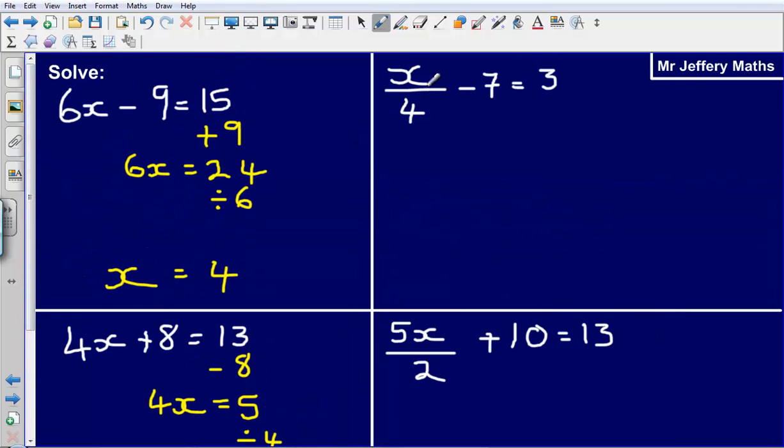Next one here, I've got x divided by 4 minus 7 equals 3. So again, I'm just going to undo this minus 7 by adding it on. When I do that, that leaves me with x divided by 4 is equal to 3 plus 7 which is 10.